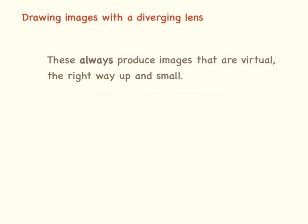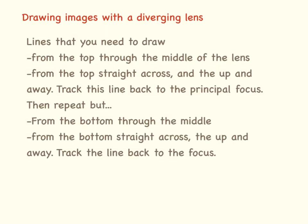Diverging lenses are a bit easier than converging lenses because they always produce images that are virtual, the right way up, and smaller than the original image. The rules to follow are: draw a line from the top through the middle of the lens; from the top straight across and then moving up and away; track that line back to the principal focus. Repeat from the bottom — from the bottom through the middle, straight across, up and away, then track the line back to the focus. This is where your image will be.